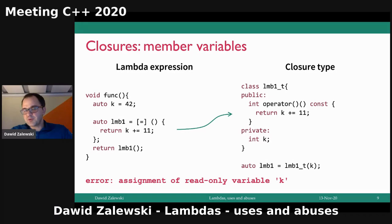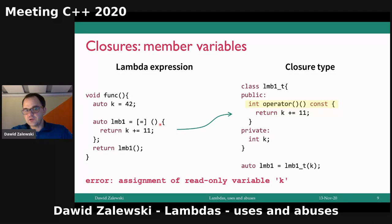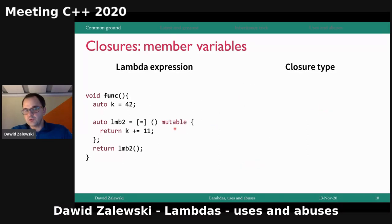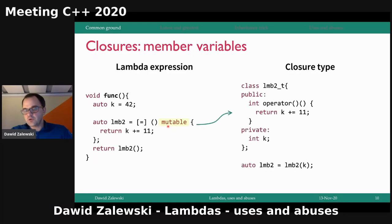The compiler will complain that you are trying to assign to a read-only variable k. This is because Lambdas work differently than normal member functions. Normal member functions can modify member variables by default unless specified as const. Lambdas work the opposite way: when you write a Lambda without specifying anything, the compiler by default generates a closure type with a const member function call operator. To prevent it, you have to add the keyword mutable — and then you get a non-const function call operator, so you can modify the member variables.